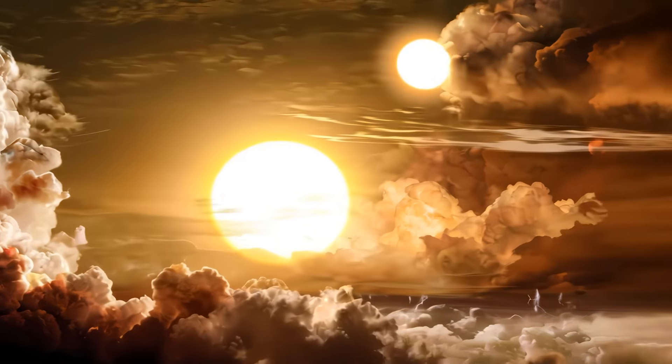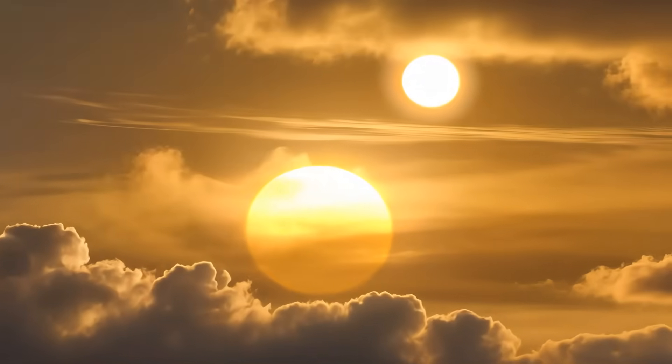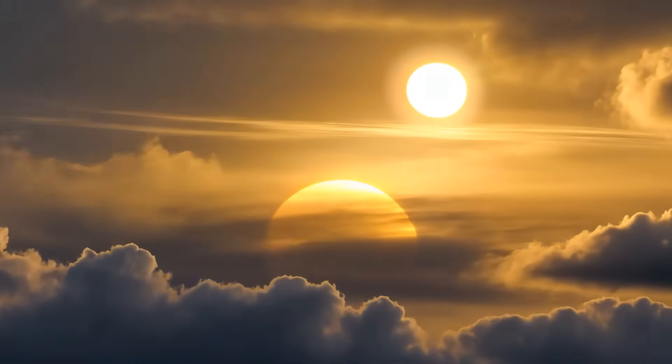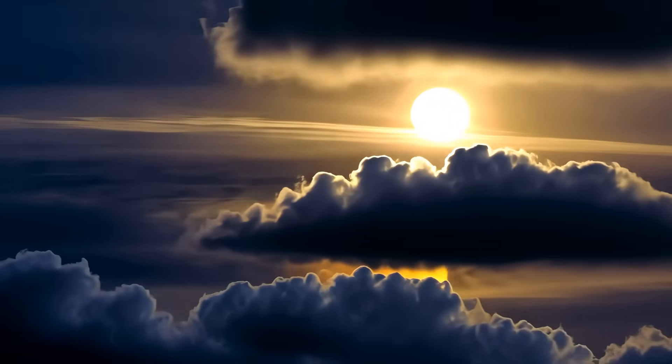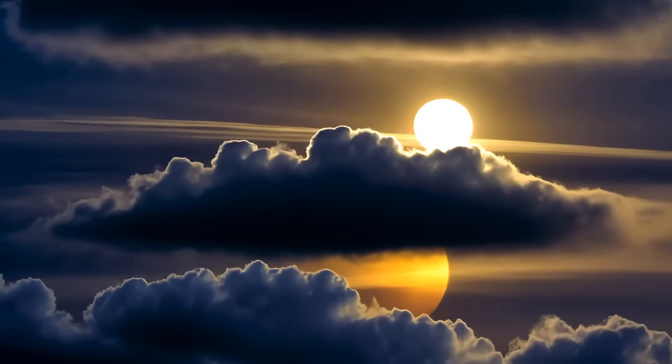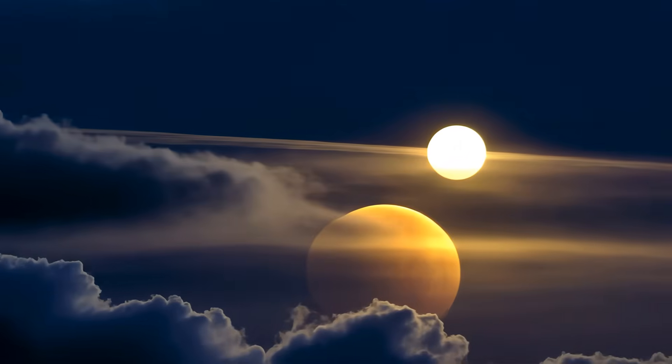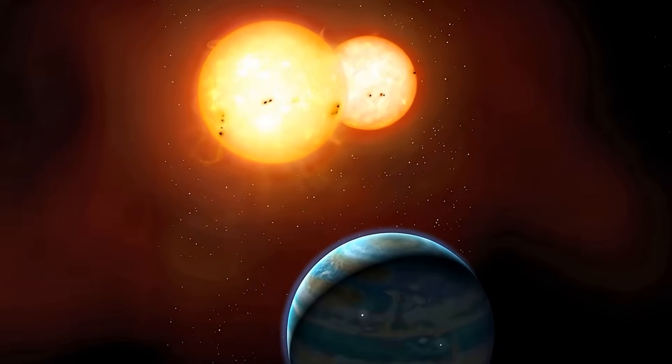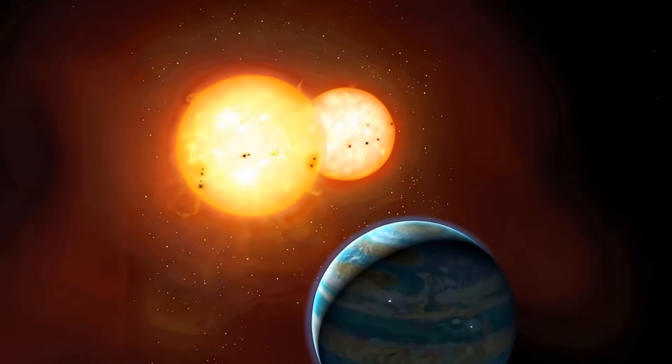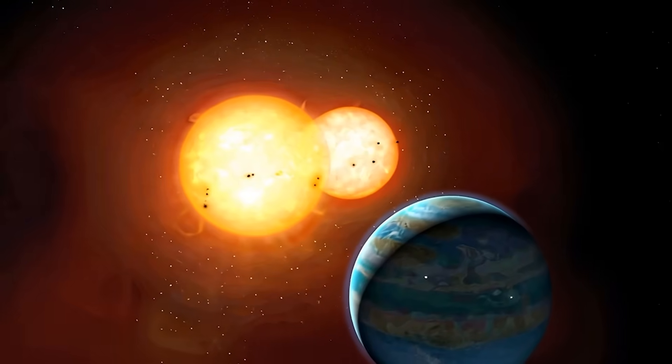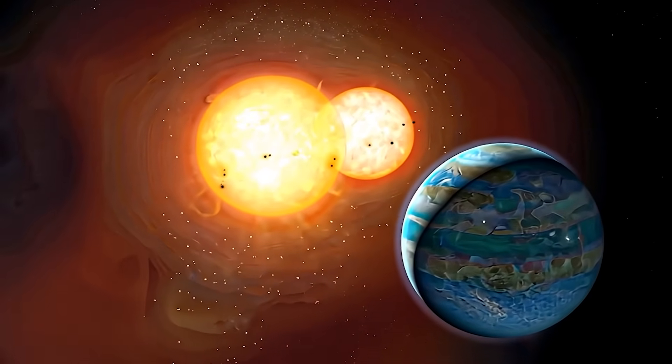The planet's unique orbit creates a day-night cycle that would befuddle any life form. As it loops above and below its brown dwarf stars, regions of the planet experience periods of constant illumination followed by extended darkness. Imagine a place where seasons aren't determined by axial tilt as on Earth, but by your world's position relative to two different heat sources that themselves orbit each other.